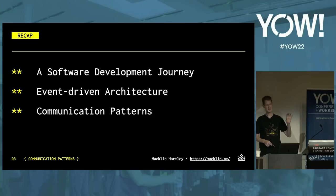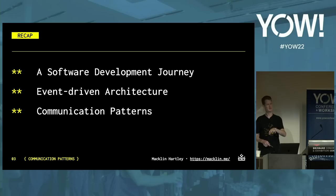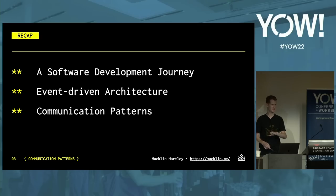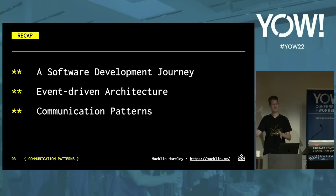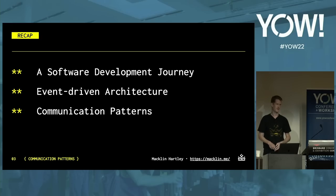Then we dived into communication patterns: choreography and orchestration. Both patterns use events to trigger the next workflow steps. But with choreography, we were using events to communicate between services — it's elegant and decentralized, but difficult to observe. With orchestration, we have a centralized workflow that uses commands for communication, but it introduces a single point of failure.